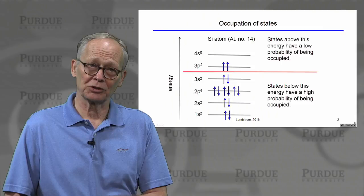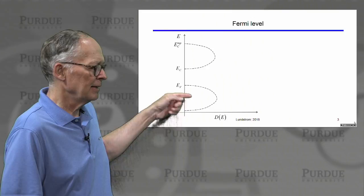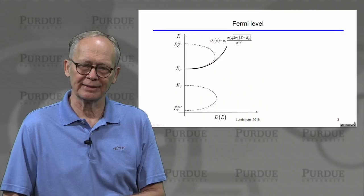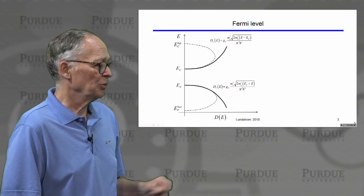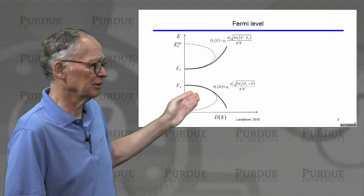That line will turn out to be very useful to us in semiconductors. In semiconductors, we have a band. Here's the density of states versus energy: top of the valence band, bottom of the valence band, bottom of the conduction band, top of the conduction band. We've seen how to compute the density of states. We're only interested in the density of states near the bottom of the conduction band because that's where the electrons are, and it goes as the square root of energy. Similarly, near the top of the valence band where the holes are, it also goes as the square root of energy.